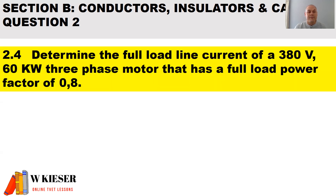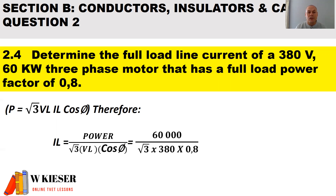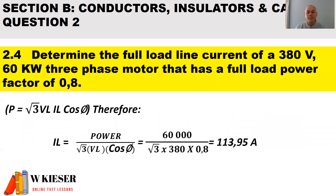To wrap up question two, we have a three-phase calculation. Determine the full load line current of a 380 volt, 60 kilowatt three-phase motor that has a full load power factor of 0.8. The formula for a three-phase circuit is: P = √3 × V_L × I_L × cos θ. Therefore, the line current = P ÷ (√3 × V_L × power factor) = 60,000 ÷ (√3 × 380 × 0.8). Therefore the line current is 113.95 amps.